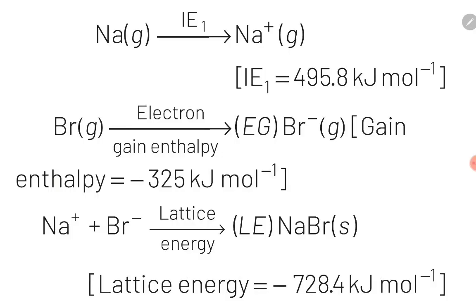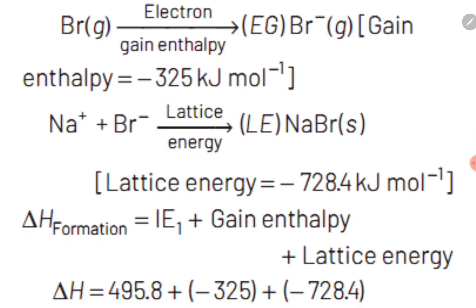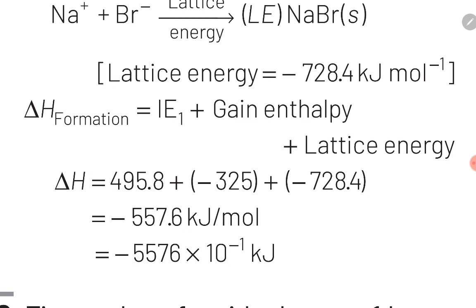The first reaction is Na(g) → Na⁺(g) + e⁻ (ionization enthalpy). The second is Br(g) + e⁻ → Br⁻(g) (electron gain enthalpy). The third is Na⁺ + Br⁻ → NaBr(s) (lattice enthalpy). Adding all three values: ΔH_f = 495.8 + (−325) + (−728.4) = −557.6 × 10⁻¹ kJ/mol. With this, we have completed this question. Let's move ahead to the next slide.